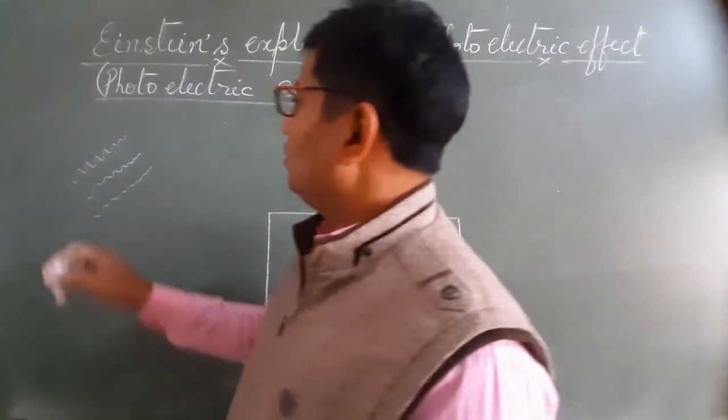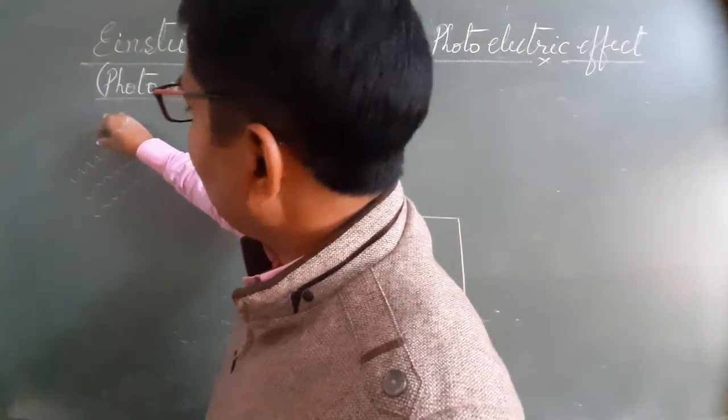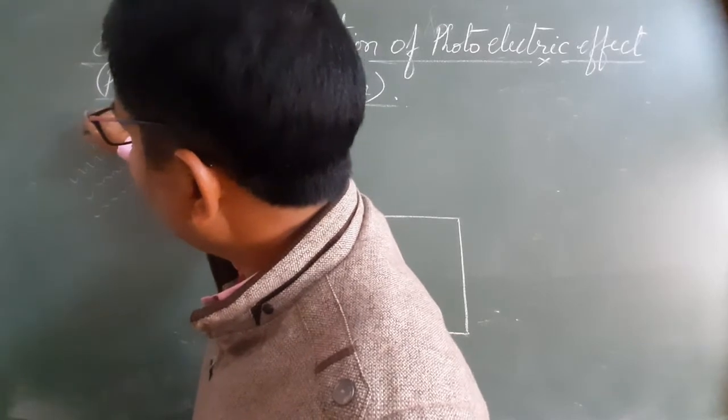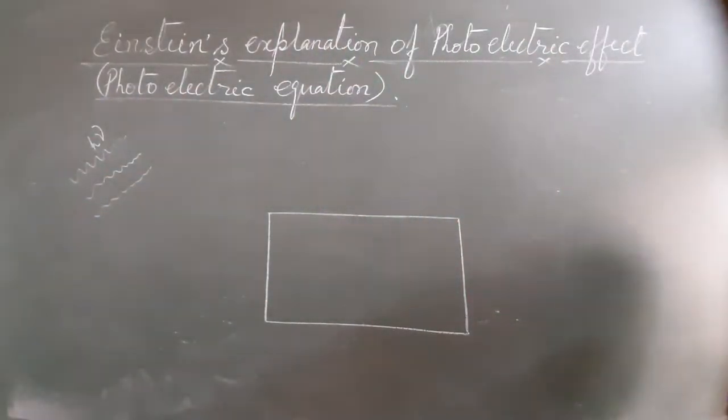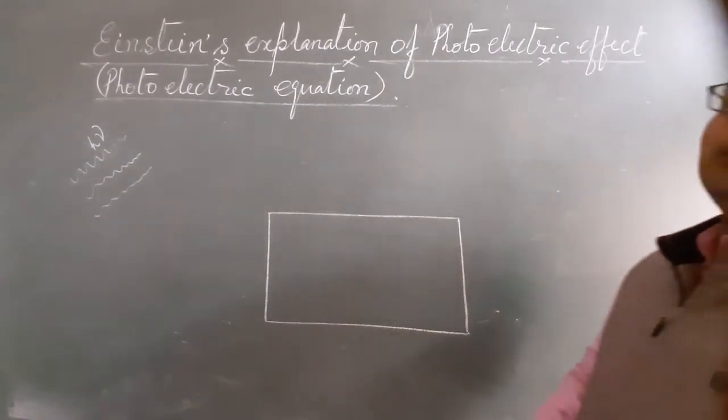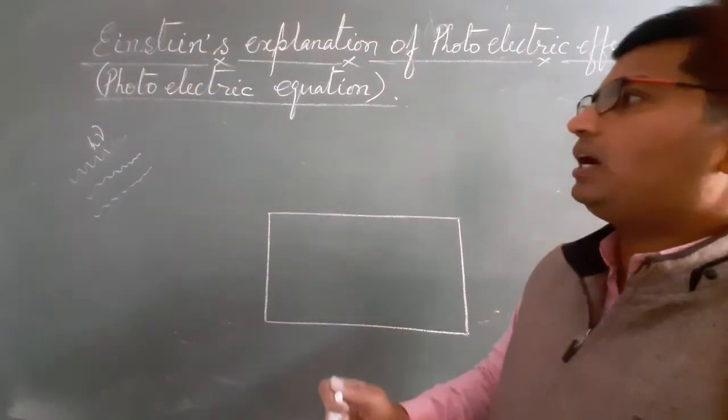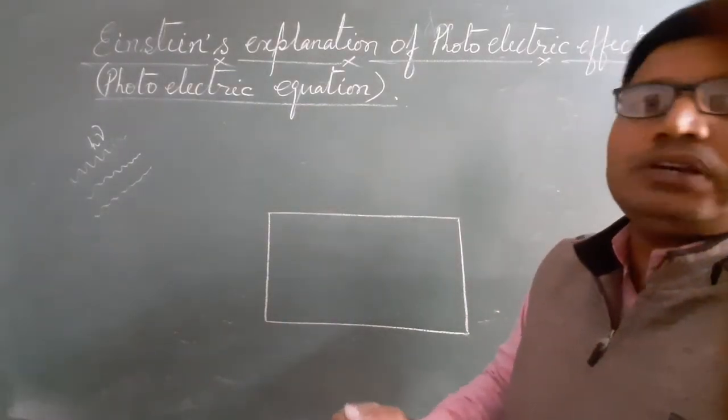Each bundle or packet has energy equal to h nu where h is Planck constant and nu is the frequency of that radiation. The energy increases with the frequency of radiation. Light photon ki energy jyadhe kab hooghi? Jab uski frequency wadhi.